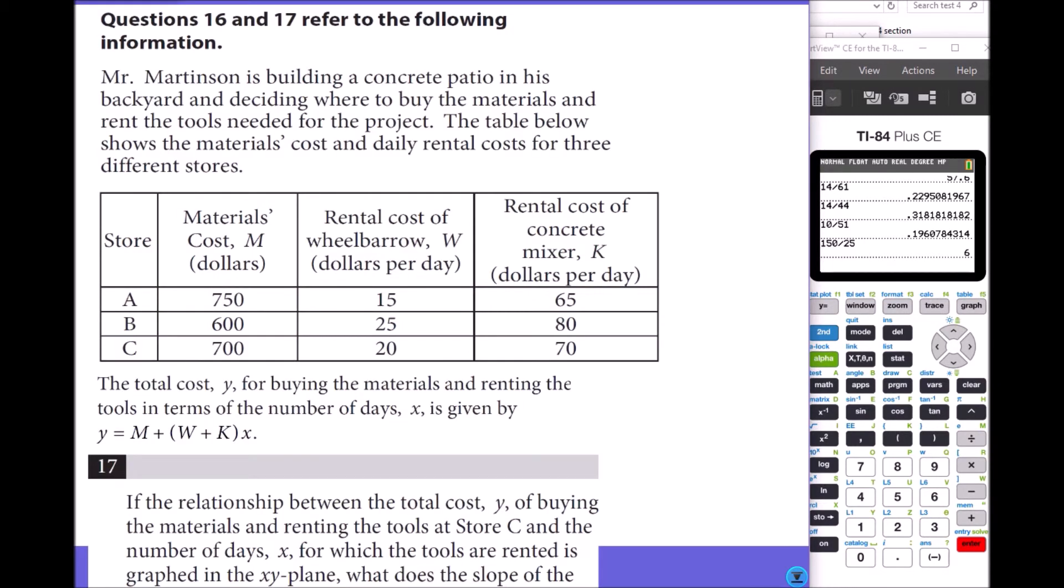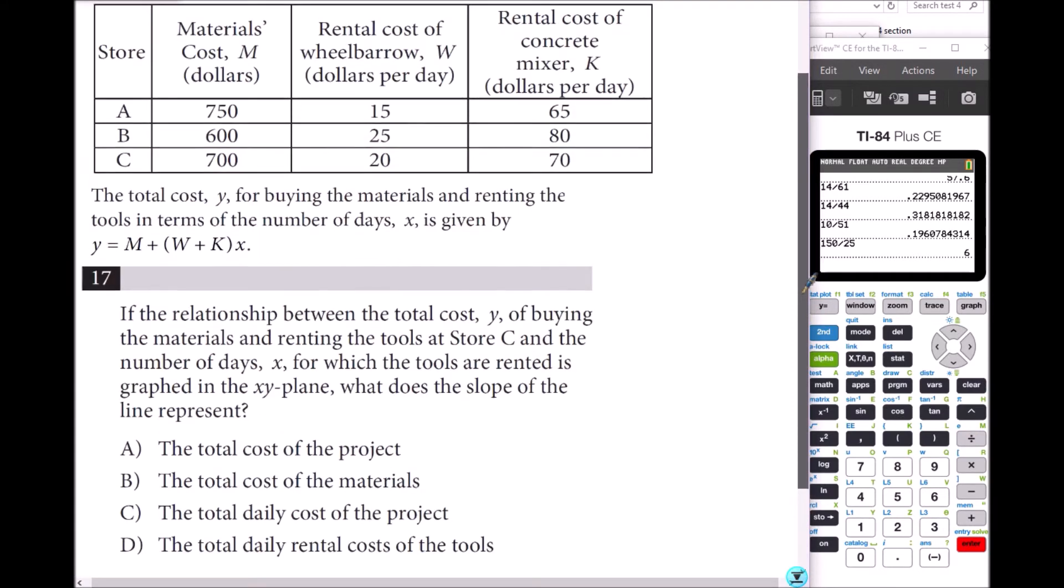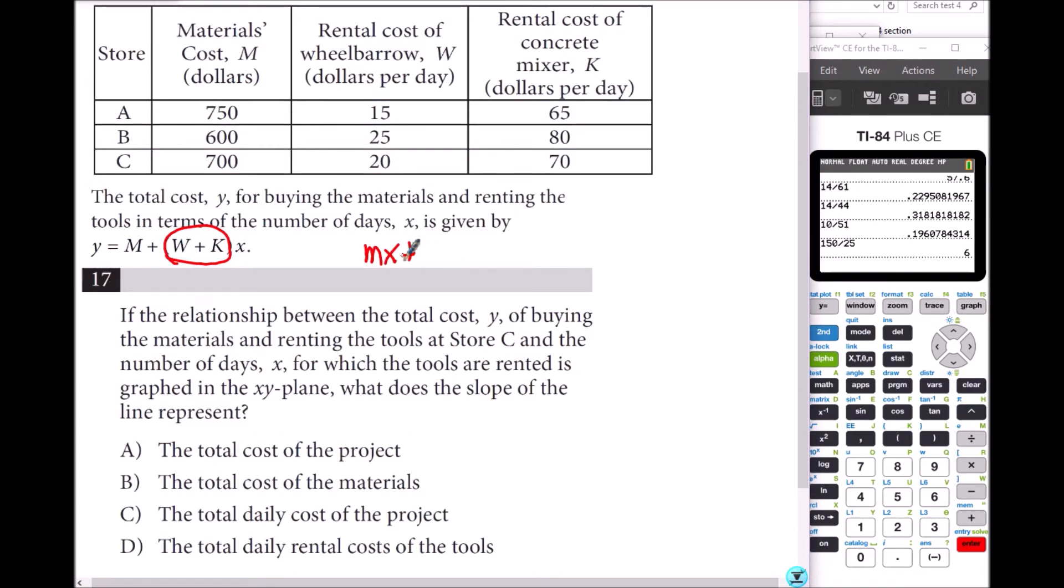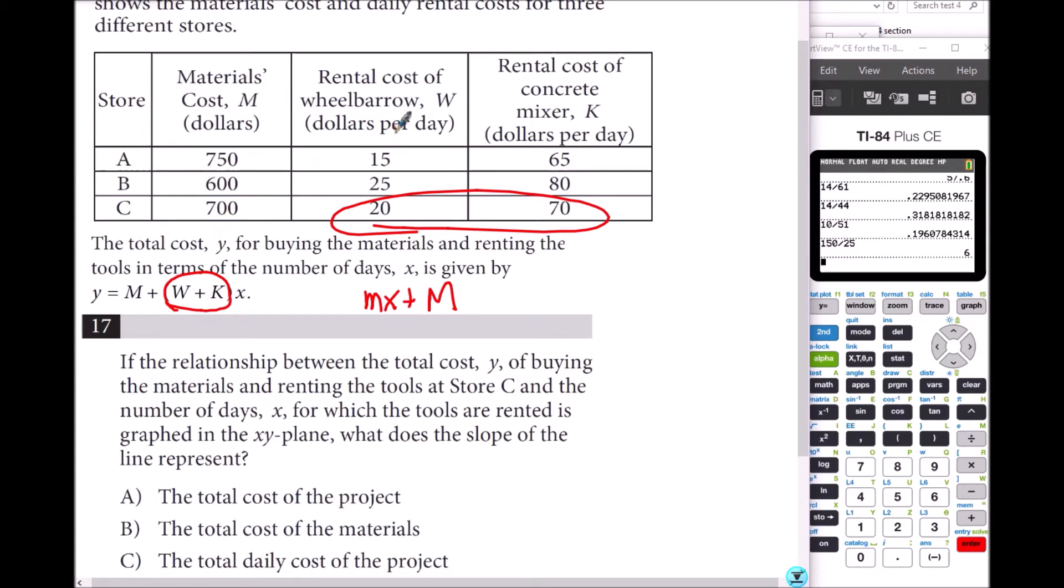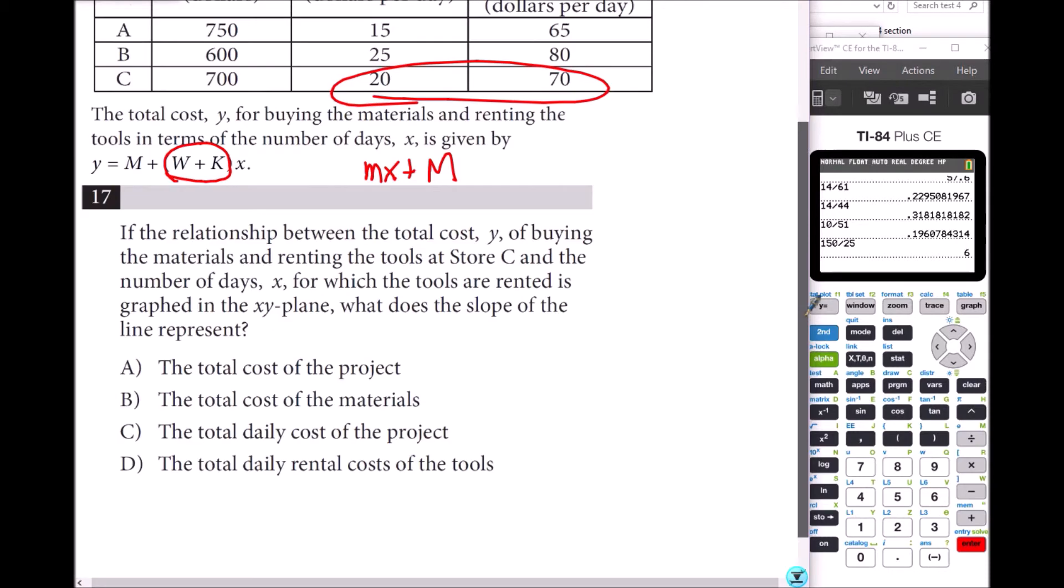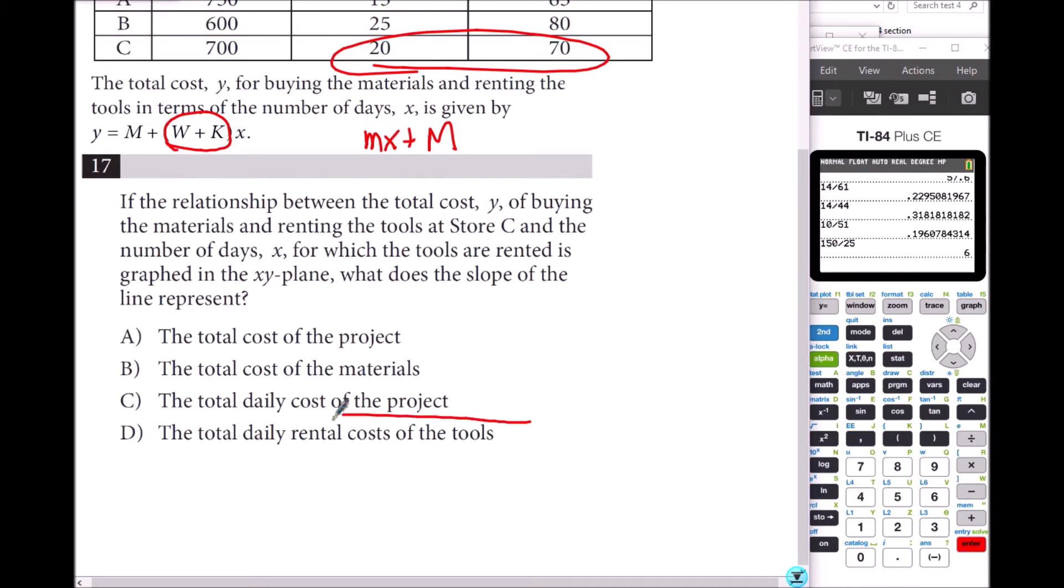Number 17: Same question. In the relationship between total cost Y of buying and renting tools at store C and the number of days X for which the tools are rented, in the graph in the XY plane, what does the slope of the line represent? This is slope-intercept form, MX plus B. Whatever you have in front of X is the slope. Whatever you're adding is the initial value. For C, you add these two, so that is W plus K, which is 90. So that is the total rental cost of the wheelbarrow and concrete mixer. So that is D.